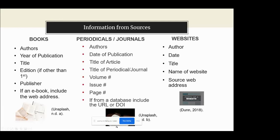If we look at book format, periodical or journal format, or websites, notice that the first three bits of information you want to look for are the same. You always want to look for any kind of author information, whether it be a personal author, individuals, a group, or an agency. You're always looking for publication information — the year of publication, or the date for a journal or website. After that, you want to look for any kind of title information: the title of a book, the title of an article, or the title of the web page.